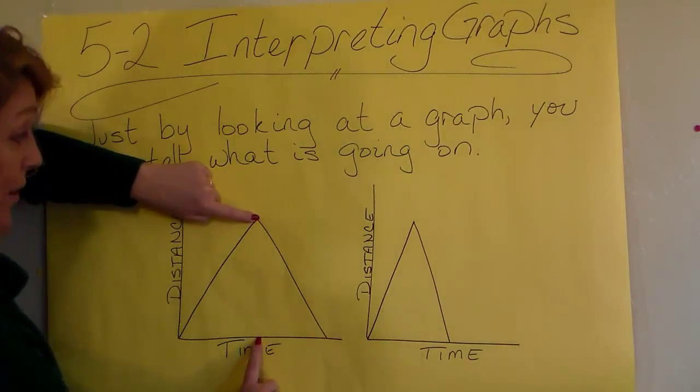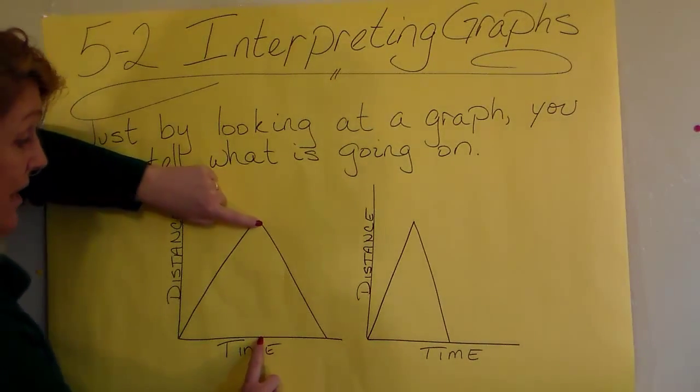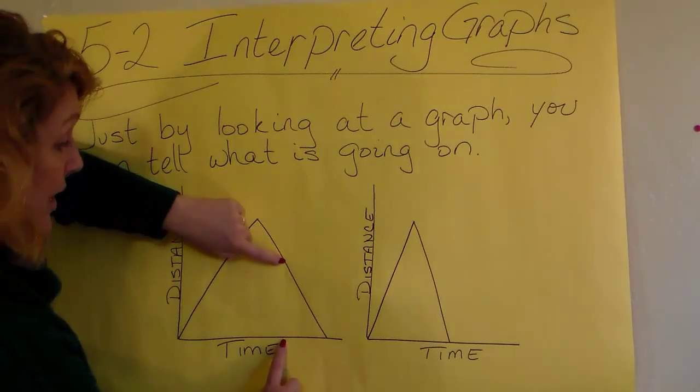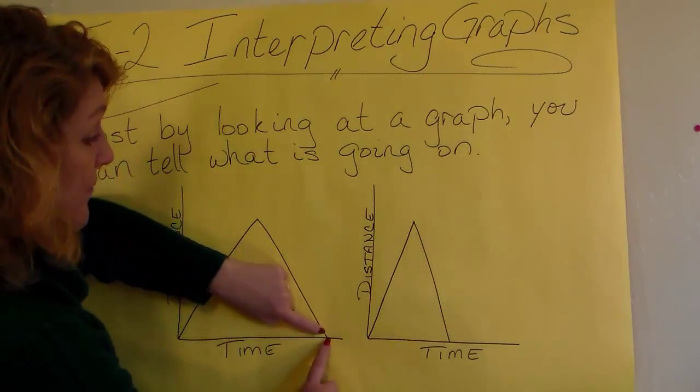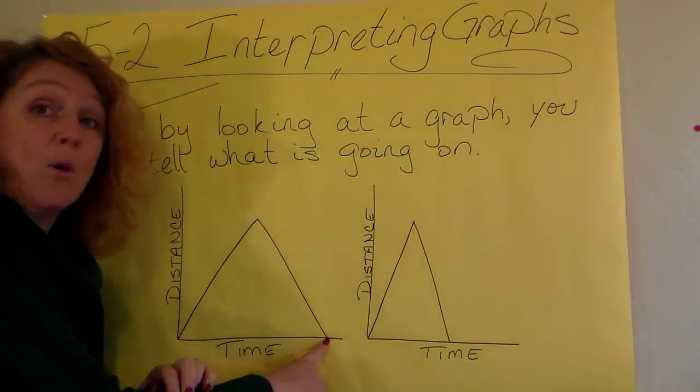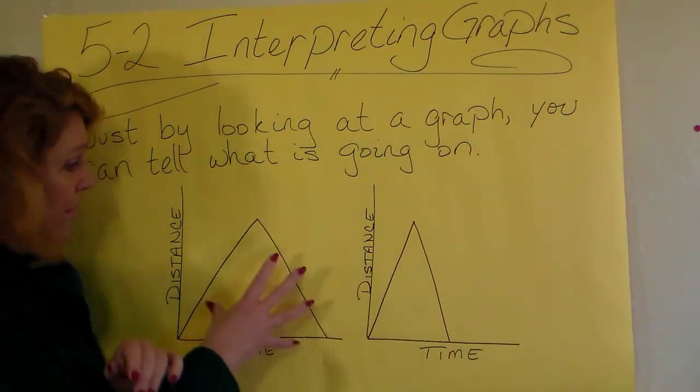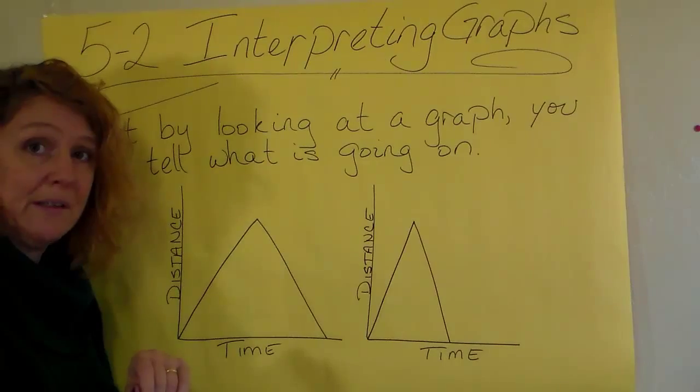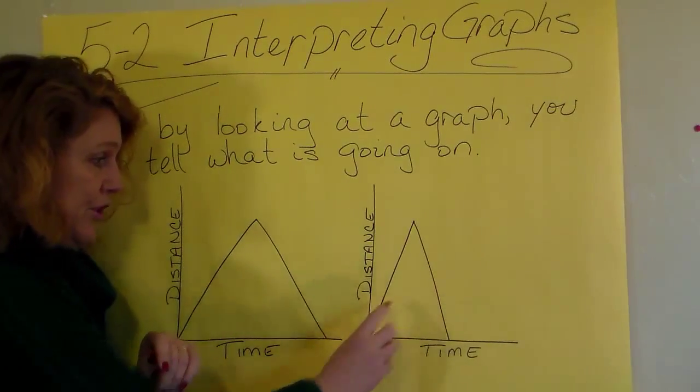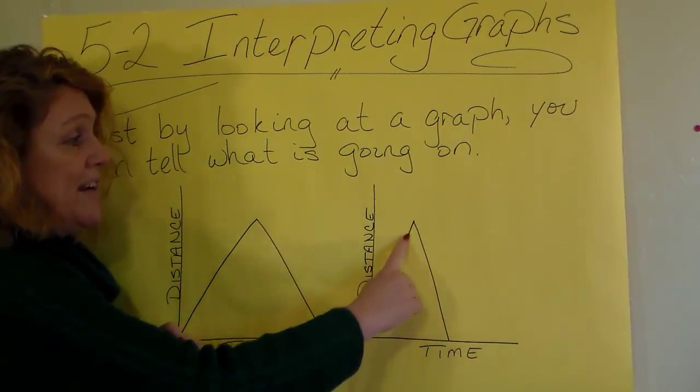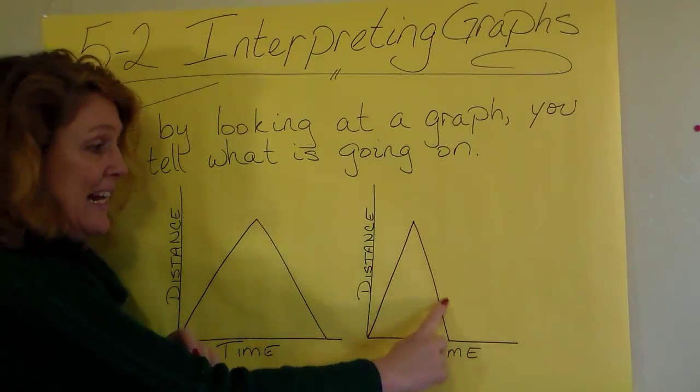And then at this point in time, I turned around and I started getting closer and closer to whatever until this time when I arrived back where I started. That's what this graph shows me. Now, this graph shows me that I went the same distance and I came back, but look,